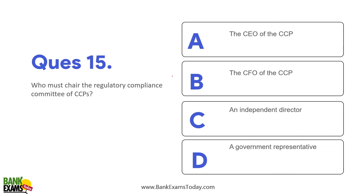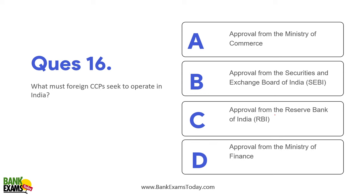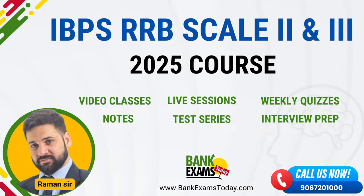Who must chair the regulatory compliance committee of a CCP? An independent director must chair it. What must a foreign CCP seek to operate in India? They must get approval from RBI, and they can indirectly continue with the indirect access they used to have in the past.